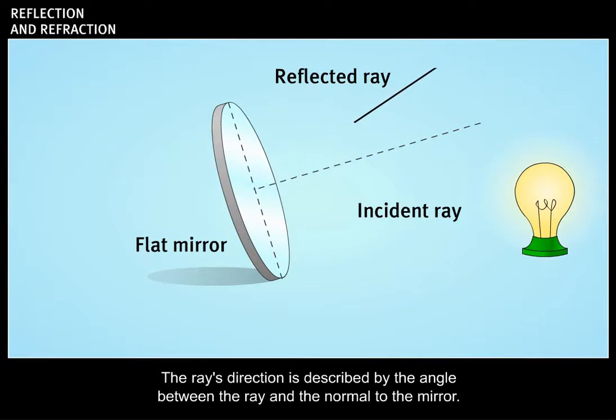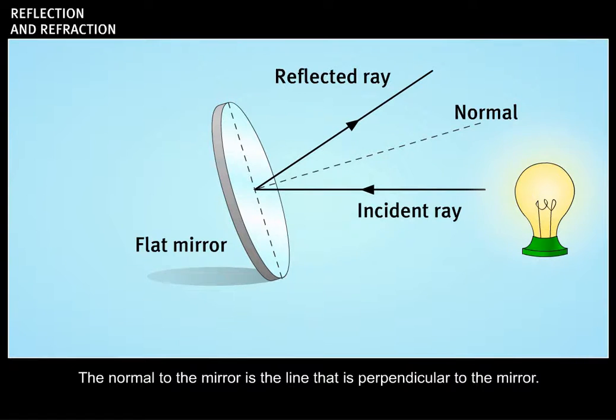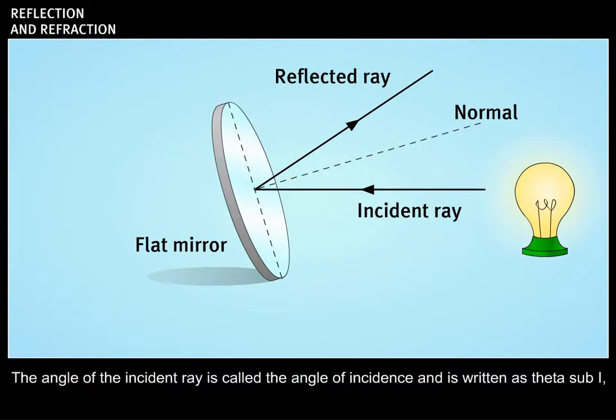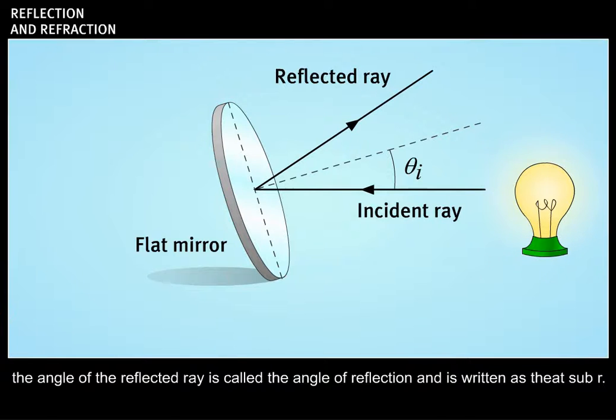The ray's direction is described by the angle between the ray and the normal to the mirror. The normal to the mirror is a line that is perpendicular to the mirror. The angle of the incident ray is called the angle of incidence and is written as theta sub i. The angle of the reflected ray is called the angle of reflection and is written as theta sub r.